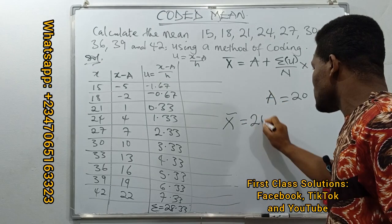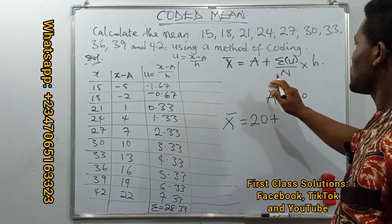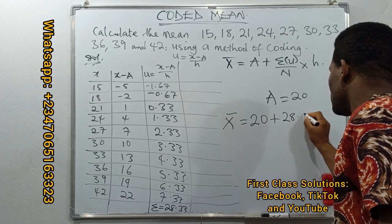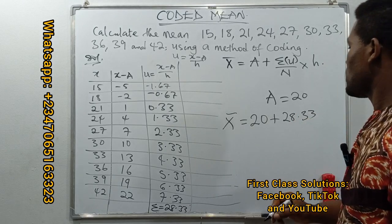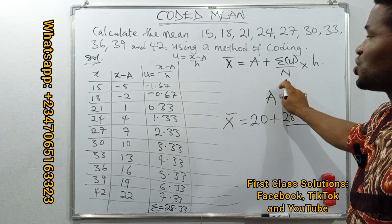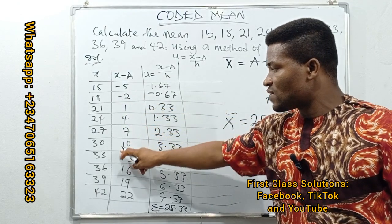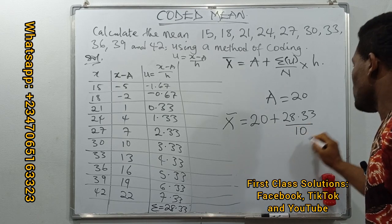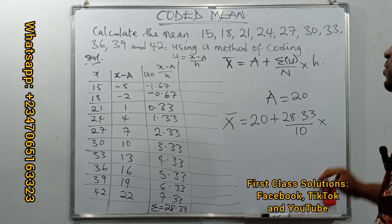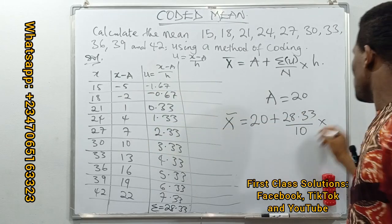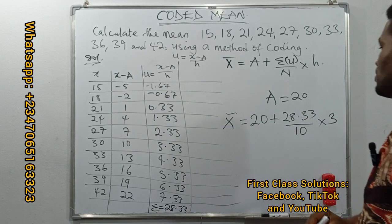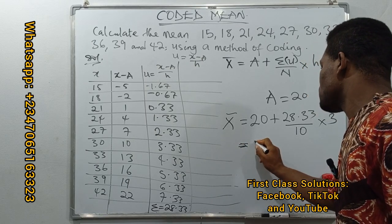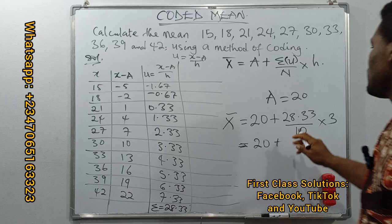Our mean by means of coding becomes 20 plus the sum of the coding factor being 28.33, then all over the number of observations being 1, 2, 3, 4, 5, 6, 7, 8, 9, 10—we have 10 numbers of observation—multiplied by H being 3, just as was noted.